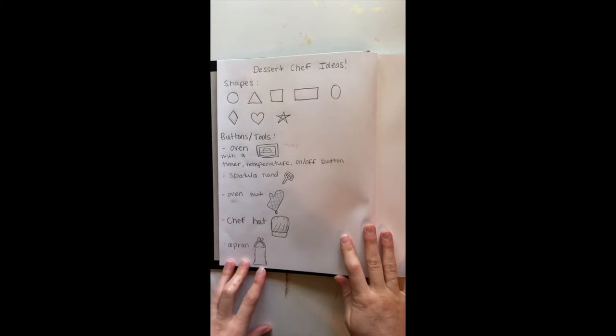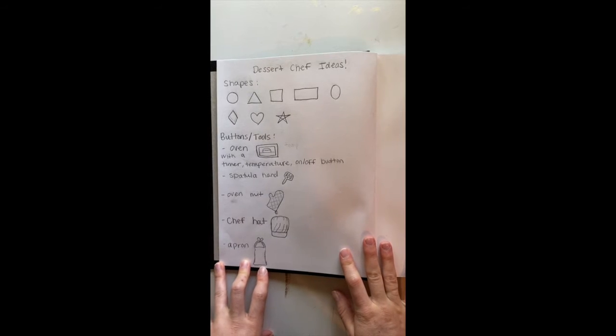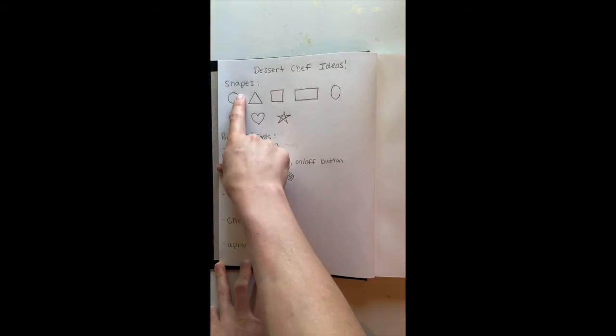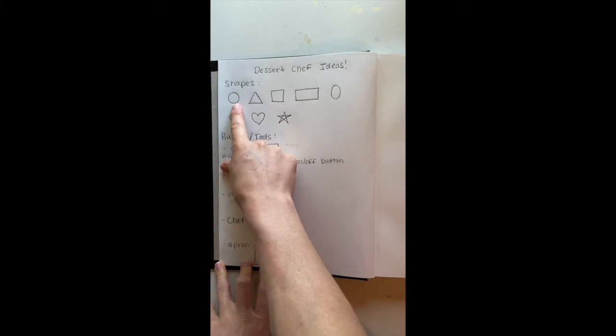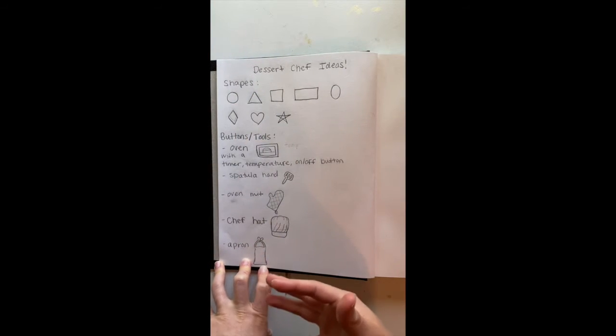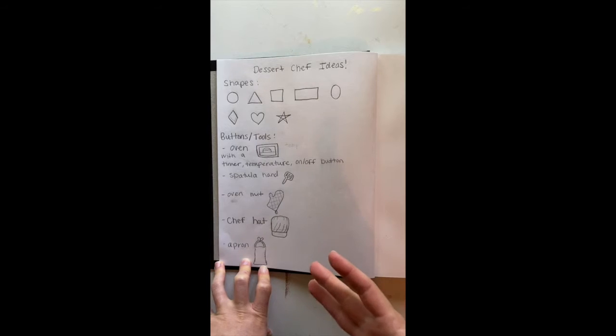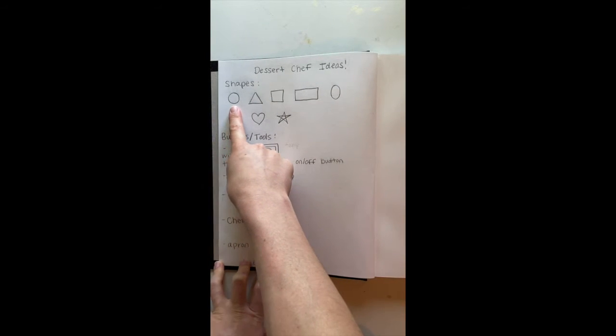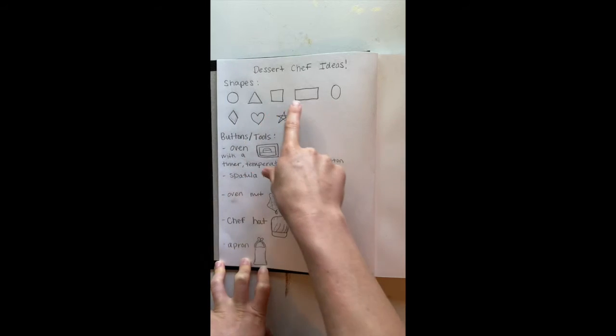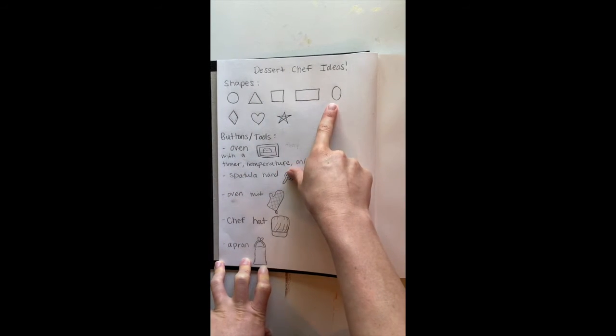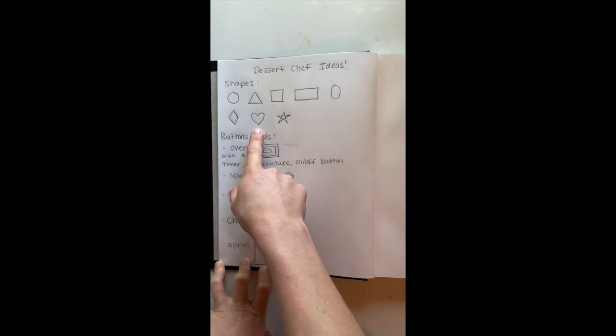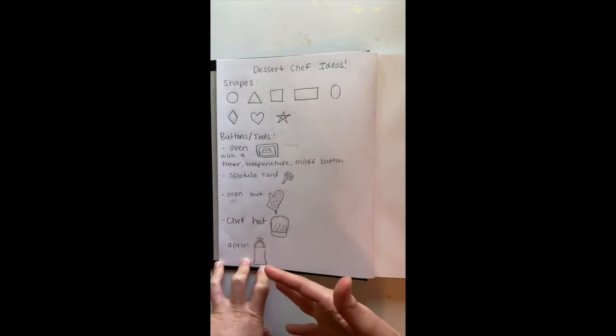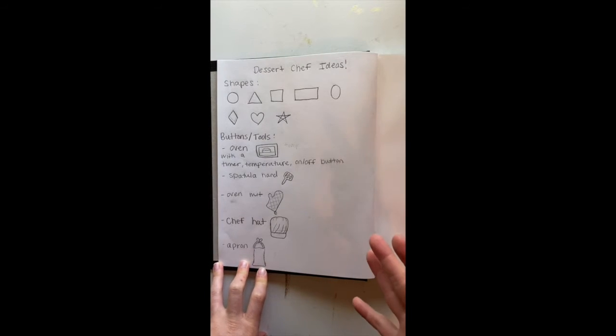Here is the beginning of my dessert chef robot ideas. I started out brainstorming some shapes that I already know that will help me with my robot design. I know the shapes circle, triangle, square, rectangle, oval, rhombus, hearts, and stars. Those are all things that I could use. Maybe you know more shapes you could add to your own list.